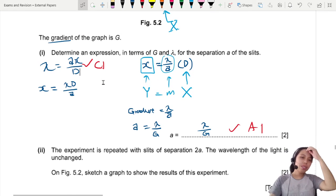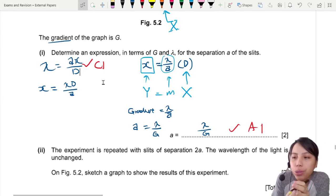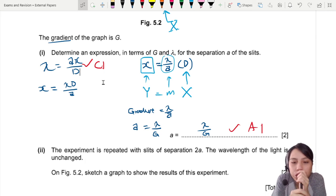Next: experiment is repeated with slits of separation 2a. Wavelength of the light is unchanged. Sketch a graph to show the graph for the new experiment.